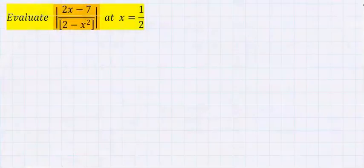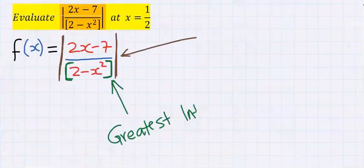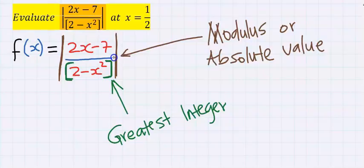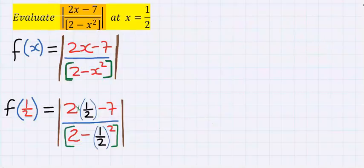Let's evaluate this question to solve this problem involving the greatest integer function. At the denominator, there is a modulus or absolute value function. Next, wherever I see x, it will be replaced with 1 over 2, as given in the question. In place of x, it will be replaced with 1 over 2.